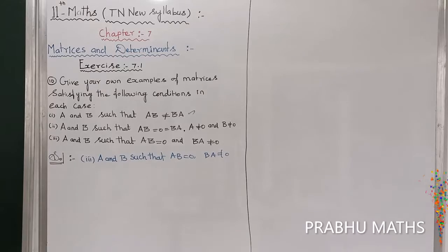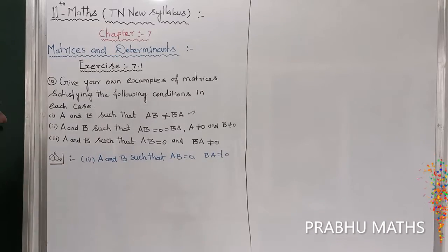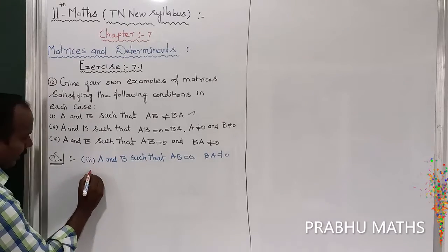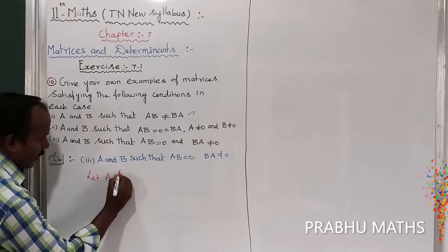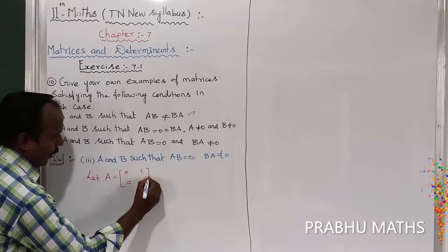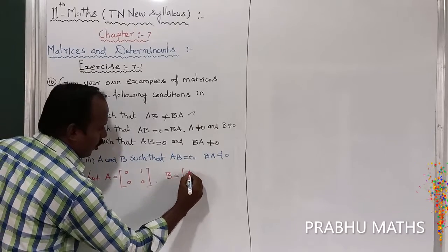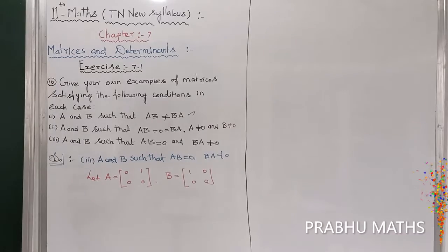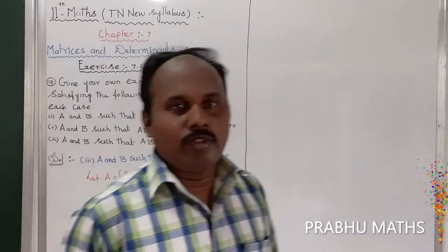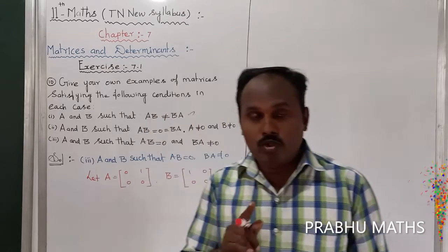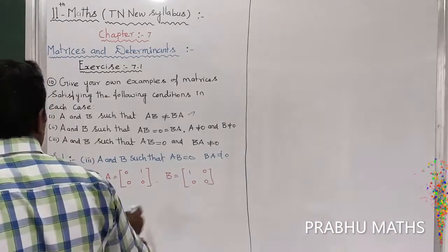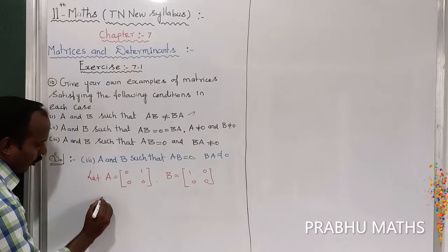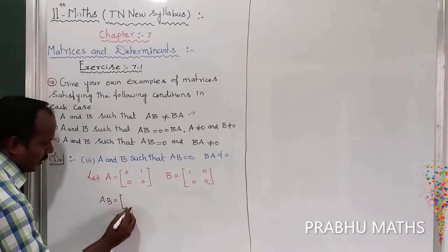Now the third substitution: A and B such that AB is equal to 0. Let us take the values — the elements of matrix A equal to [0, 1; 0, 0], and matrix B equal to [1, 0; 0, 0]. Matrix A should have only one non-zero element, the remaining all 0. Matrix B is also such that any one value should be non-zero, and the remaining must be 0. That is the condition. Now let us find out the AB value.